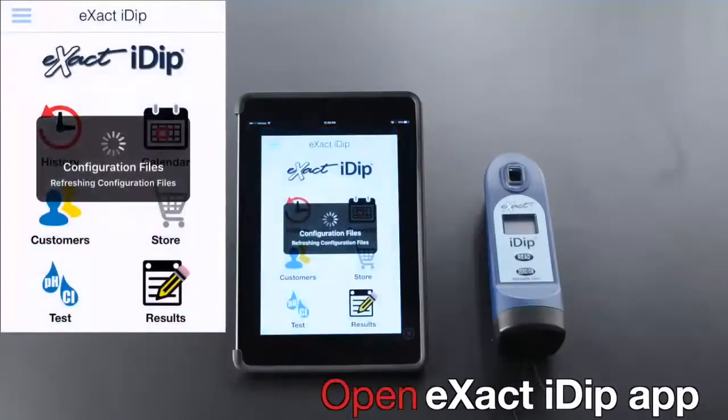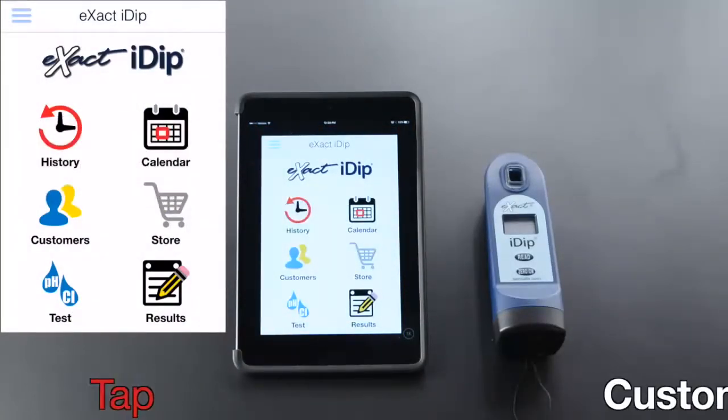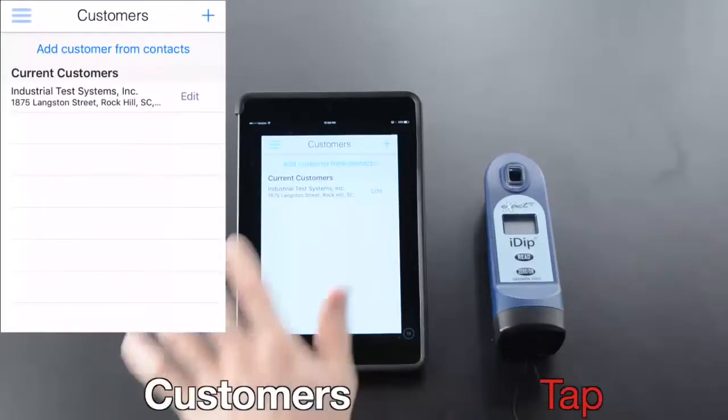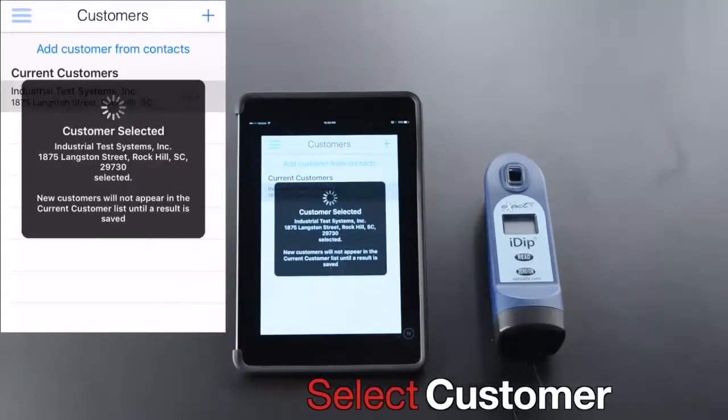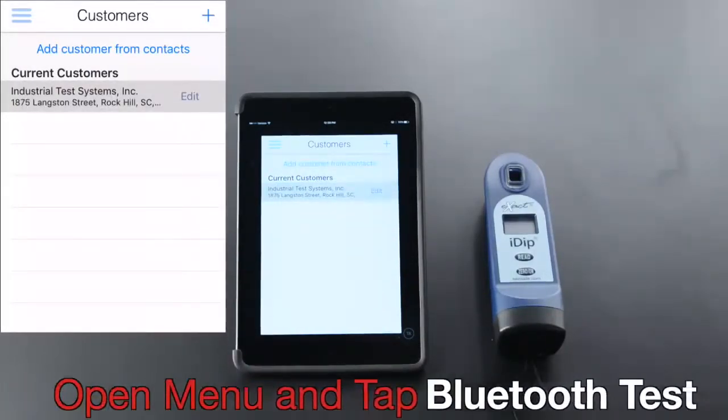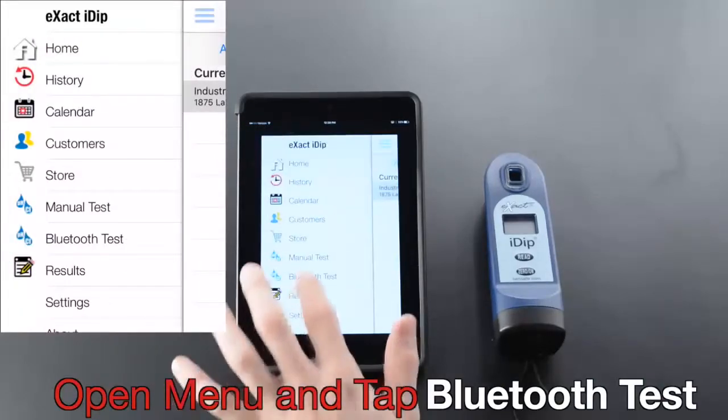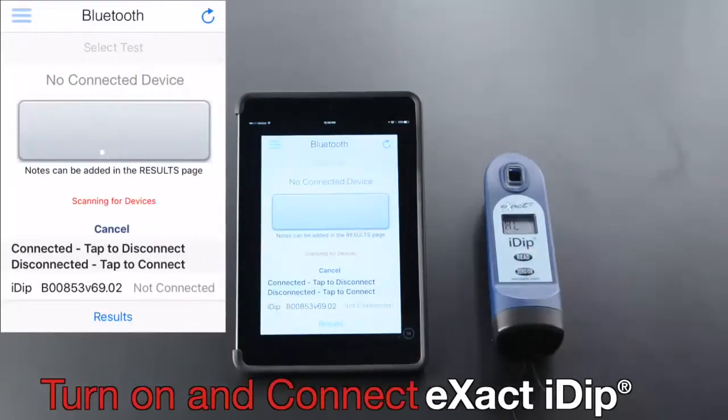Open the eXact iDip app, tap customers, select customer, open menu, and tap Bluetooth test. Turn on and connect eXact iDip.